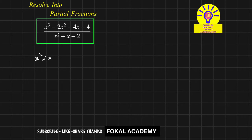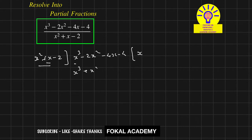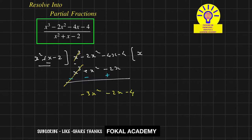The denominator is x squared plus x minus 2, and the numerator is x cubed minus 2x squared minus 4x minus 4. To remove the x cubed term, multiply x by the denominator equation, which gives x cubed plus x squared minus 2x. After subtracting, the result becomes minus 3x squared minus 2x minus 4.